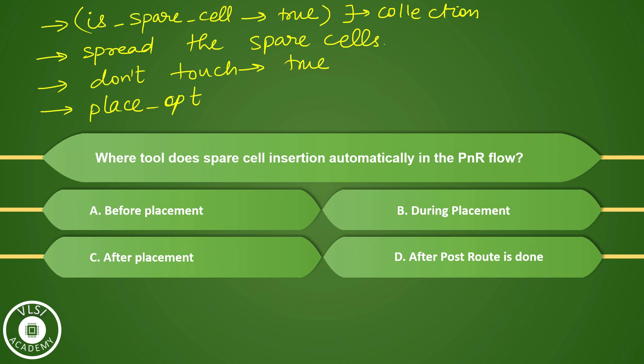This is how the usual flow of automatic spare cell insertion works. So ideally speaking, during the placement itself this automatic insertion happens. We can always do before placement, but that will be called as manual insertion. After placement also you can do; that also is called as manual insertion. Even after post route also you can do; that is also manual. Automatically the tool does in this case.